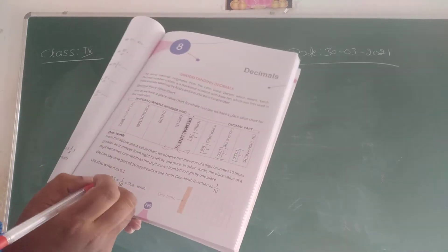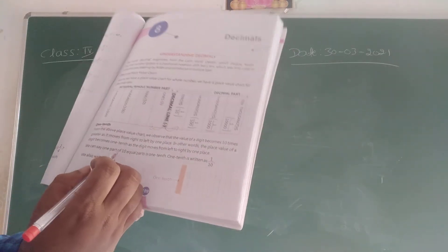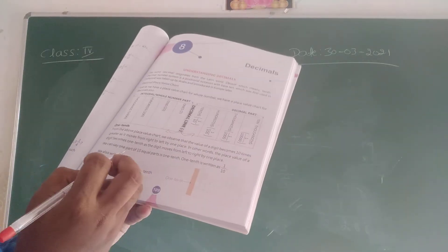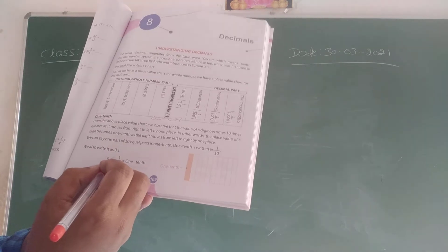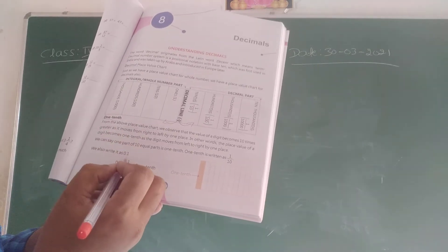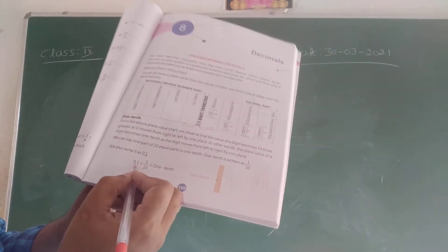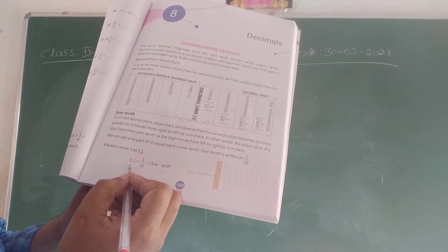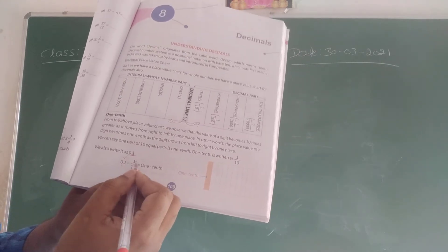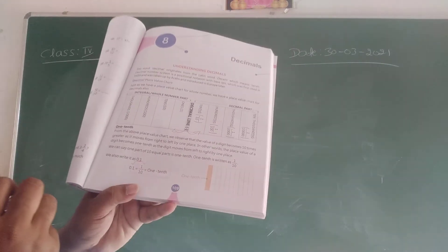Next, one tenth. As I told you, one tenth can be written as 0.1. And 0.1 can be written as one by ten, that is one tenth.